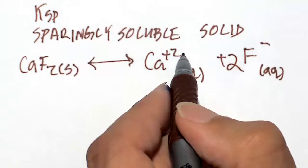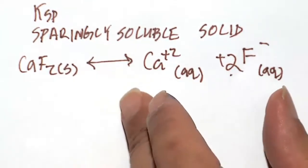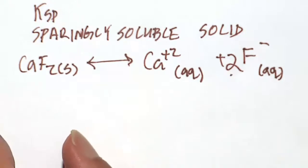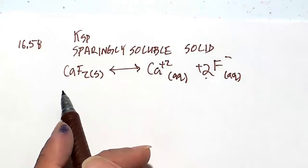A lot of students do not balance. So we've got fluoride at 2. Also, the charges are balanced, right? Plus 2 and minus 2 on the product side equals 0.